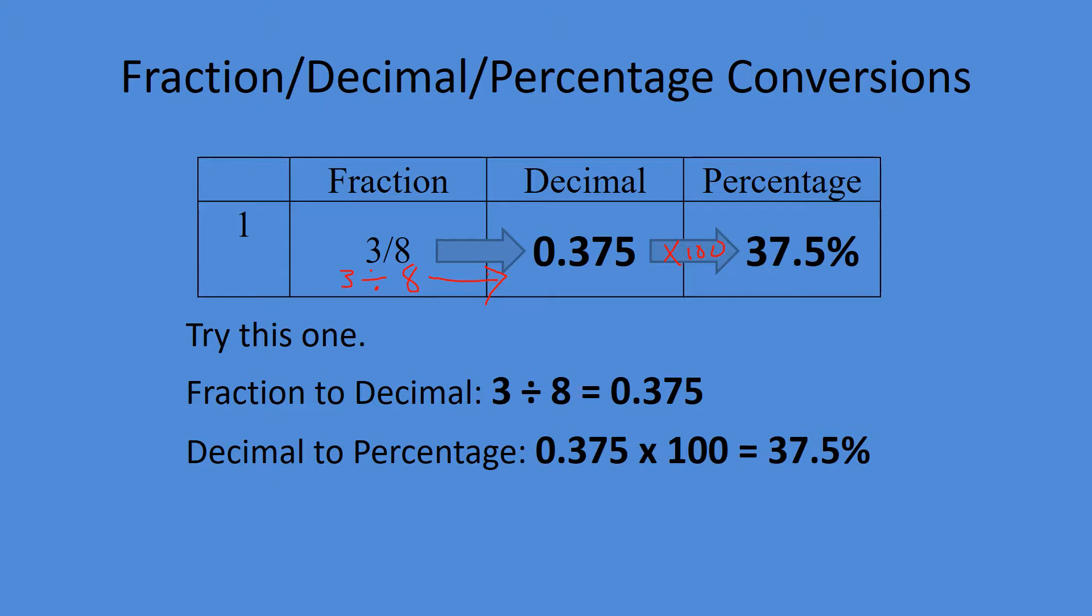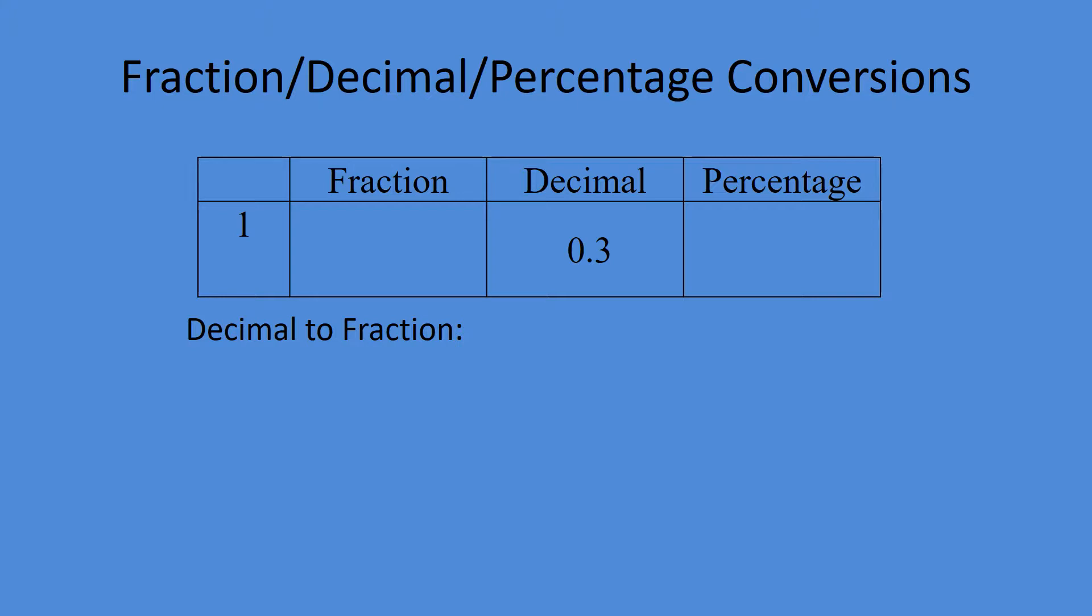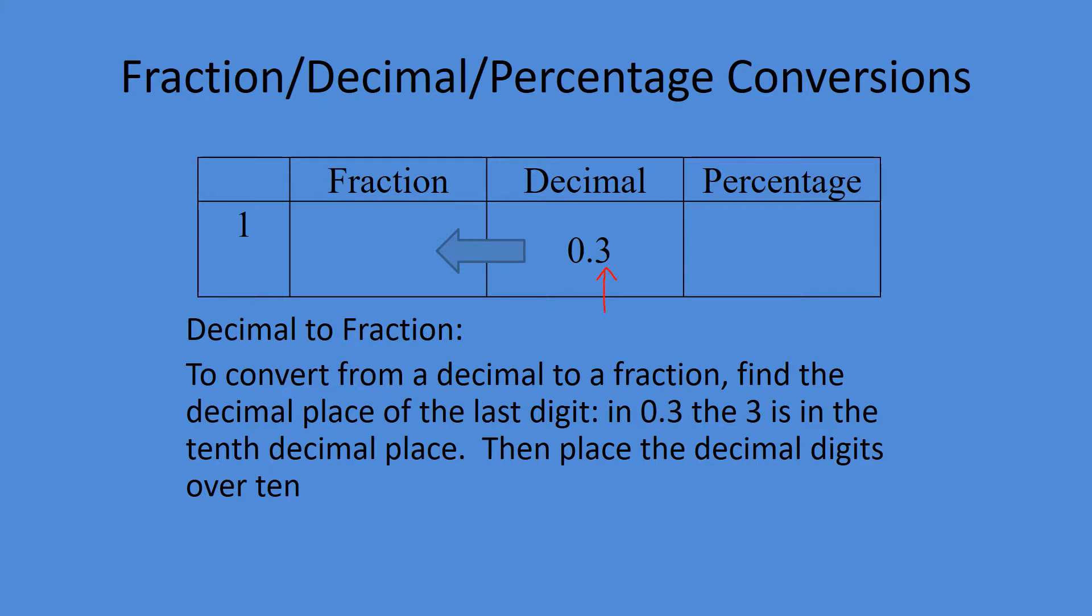This time we're starting with the decimal. We already know how to go to percentage, so let's go to fraction first. Look at the last decimal place that you have. The three is in the tenths place, so that means your denominator is going to be ten. All you have to do is put all those digits on the top, so we'll end up with three over ten. You can always check your work: just do numerator divided by denominator, and it should equal your decimal. Decimal to percentage: times a hundred. In this case, 0.3 times a hundred would give us 30%.